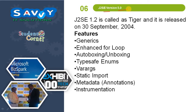Java 5 was released on 30th September 2005. Features are Generics, Enhanced For Loop, Auto Boxing and Unboxing, Type Safe Enums, Var Args, Static Import, Meta Data, and Instrumentation.